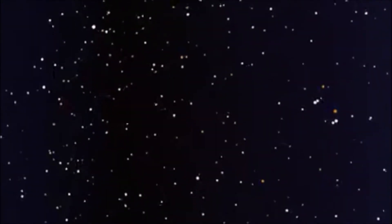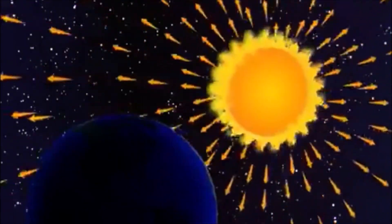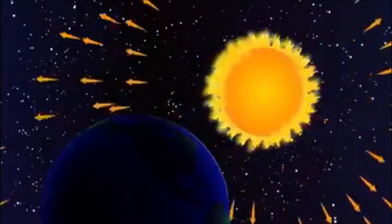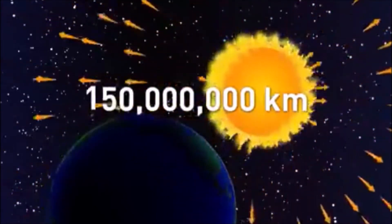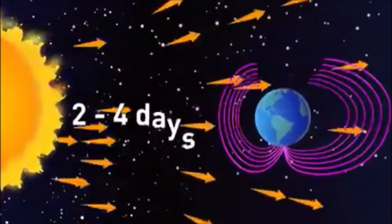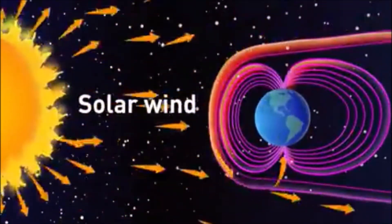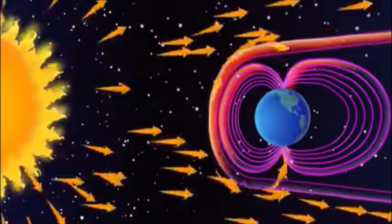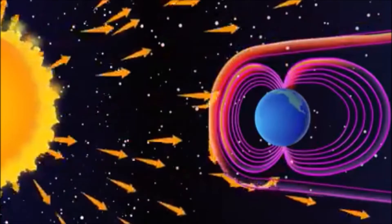The aurora borealis are caused by particles — electrons and protons — blasted out from the sun in all directions and colliding with gases in the Earth's atmosphere. Those particles travel 150 million kilometers from the sun to reach Earth, which can take from two to four days. That flow of particles is called the solar wind. A lot of particles, when they reach the magnetic field, are deflected away into space, but some become trapped in the magnetic field.